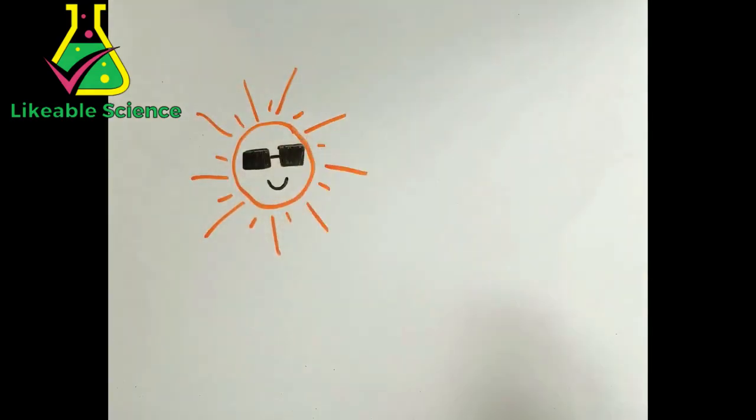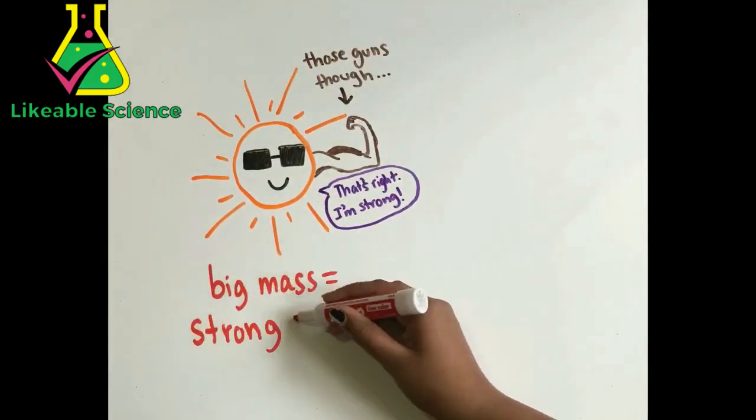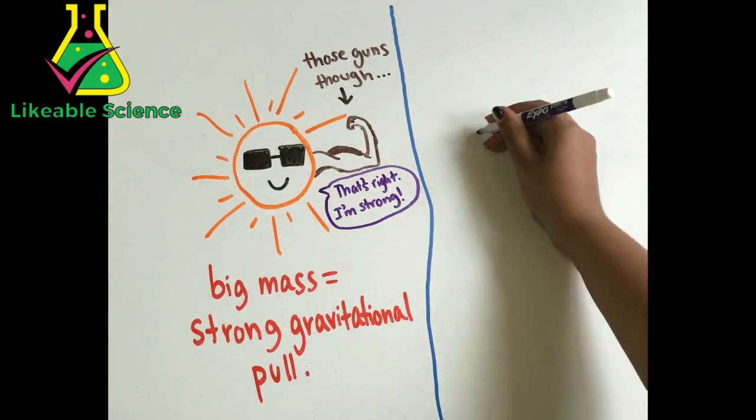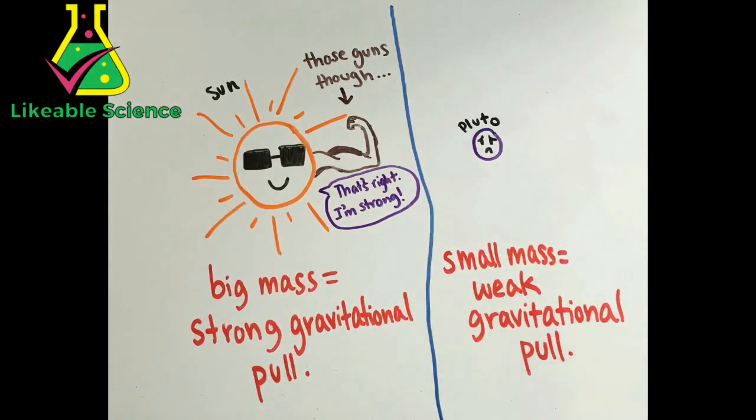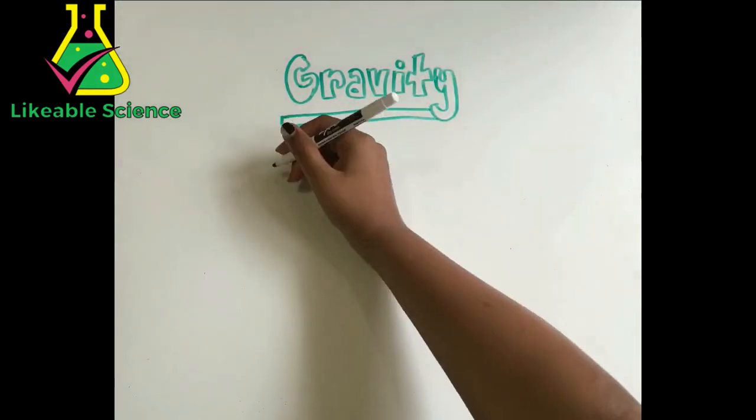If an object like the Sun has a lot of mass, then it will have a strong gravitational pull. If it has a tiny mass like Pluto, then the gravitational pull will be pretty weak. Now that we're done with mass, let's talk about some gravity.